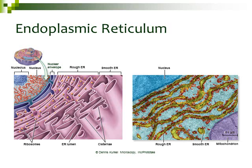These two different types of ER — the rough and the smooth — are named based on how they look under a microscope. The rough ER is studded with ribosomes, so it looks rough when you look at it under a microscope. The smooth ER is not studded with ribosomes, so it looks smooth — just a smooth membrane under the microscope.